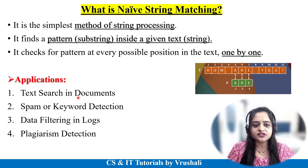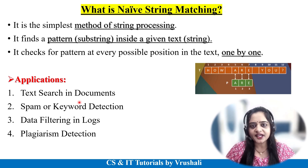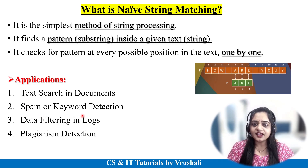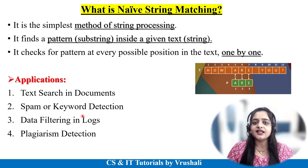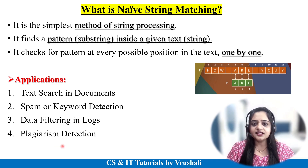This algorithm is used in text search in documents. For example, in Microsoft Word, if you have to find a particular word, you press Control+F to search — at that time the naive string matching algorithm is used. It finds your pattern by checking each and every character and word in your file. It is also used for spam or keyword detection. In Gmail, to identify spam emails with keywords like 'offers' or 'discount', naive string matching is used. It is also used for data filtering and plagiarism detection.